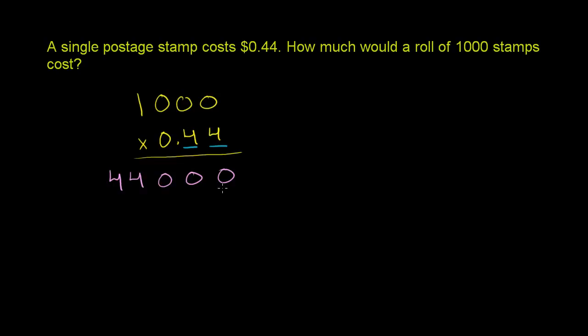So we count from the right. We count 1, 2, stick the decimal right there. So our answer is 440, and these trailing zeros really add nothing there. So 1,000 times 0.44, or 44 cents really, is 440.